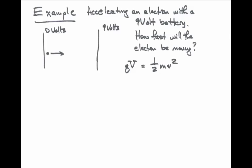If we want to solve for the velocity, the velocity is then just the square root of 2 times the electron charge times the voltage difference divided by the mass.